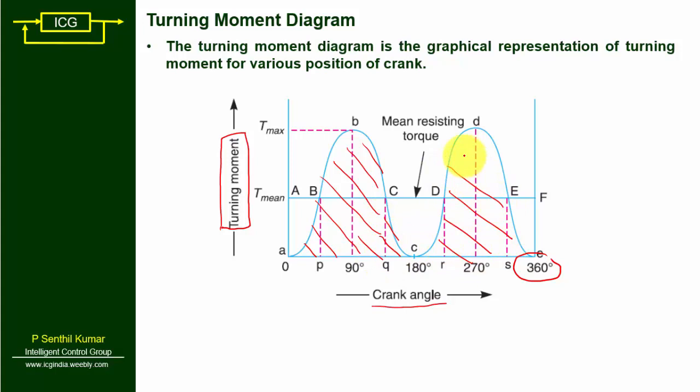For a linear system, work done equals force into displacement. For a rotary system, work done equals torque into theta. Here we have torque on the y-axis and theta on the x-axis, so the area is the multiplication of T and theta. Therefore, the area of the turning moment diagram represents the total work done by the system.